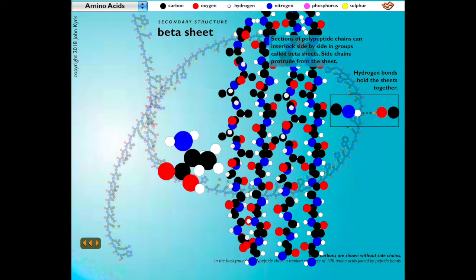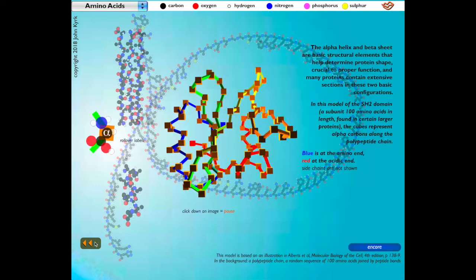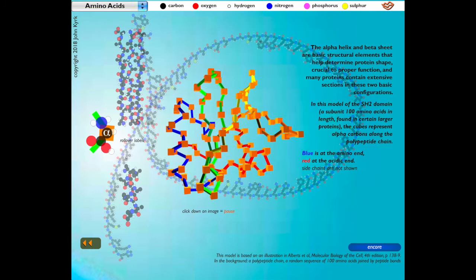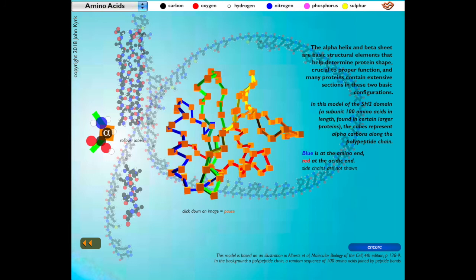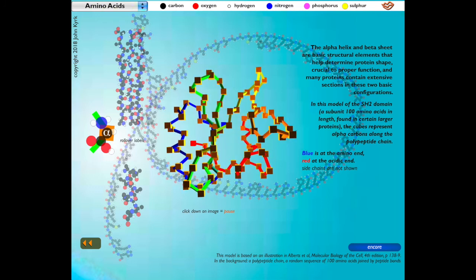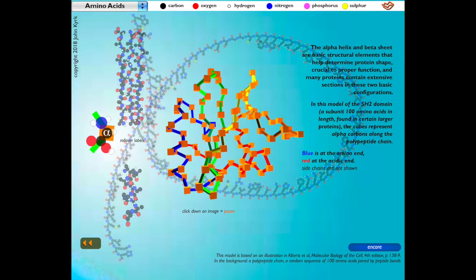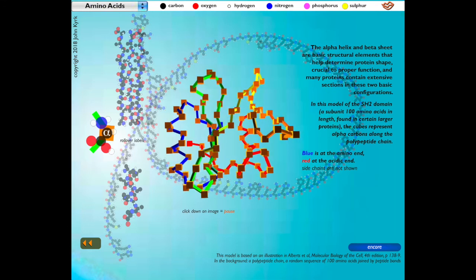The alpha helix is not the only secondary structure amino acid chains can take. Sections of polypeptide chains can also interlock side by side in groups called beta sheets. Side chains protrude from the sheet. Again, hydrogen bonds hold the sheets together. The alpha helix and beta sheet are basic structural elements that help determine protein shape, crucial to proper function. And many proteins contain extensive sections in these two basic configurations.